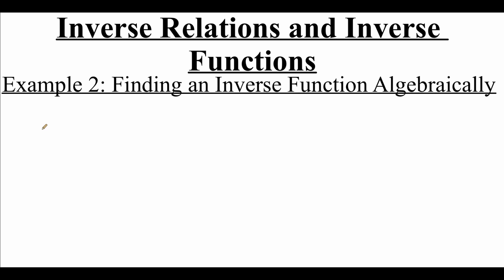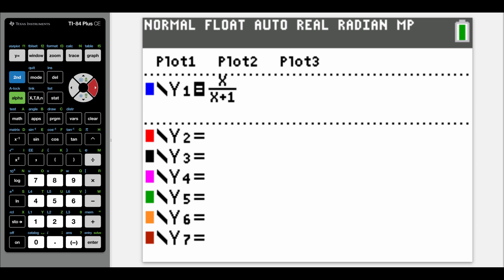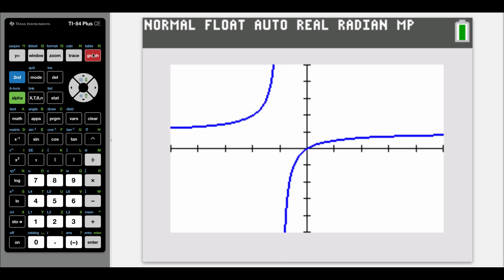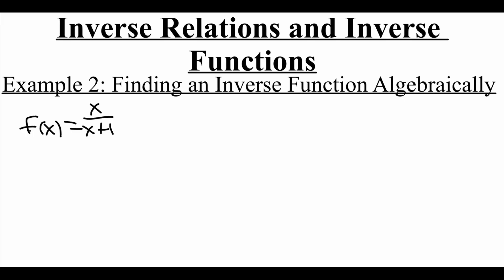So we're going to look at finding an inverse function algebraically for f of x equals x over x plus one. The first thing I want to do is graph it out to make sure that it does pass the horizontal line test before we keep moving. In my calculator, in my y equals screen, I already have my function typed in — x over x plus one. When I hit graph, I get a picture that looks something like this. So yes, this one does pass the horizontal line test, so now we're going to keep working.